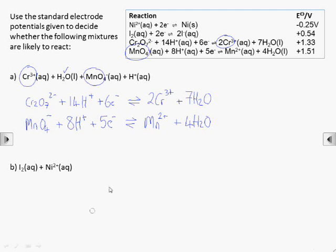Now we need to indicate which way we want each reaction to go. Cr3 plus is one of the reactants in the question, so we want this half equation to go from Cr3 plus to Cr2O7 two minus ions, which is an oxidation, since the Cr3 plus ions are losing electrons to get to an oxidation state of plus six.